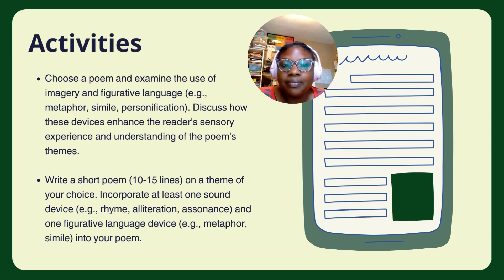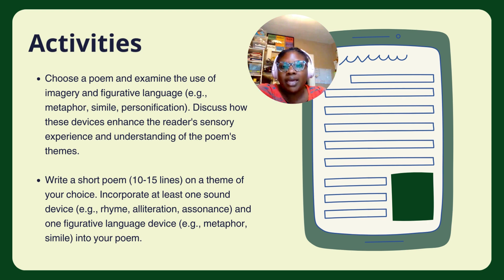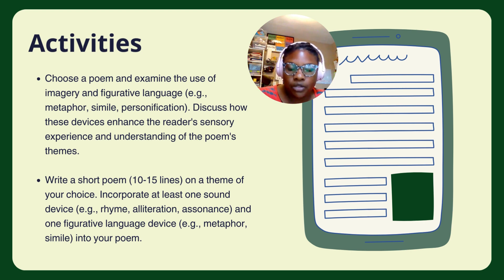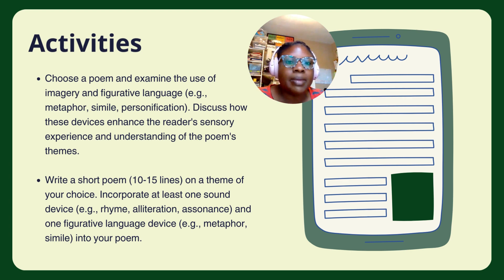The second activity: write a short poem, 10 to 15 lines, on a theme of your choice. Incorporate at least one sound device — for example, rhyme, alliteration, or assonance — and one figurative language device, such as metaphor or simile, into your poem. Be sure to pause this video where needed and take your time working on it. Make sure to add details. Don't forget your name and the date.